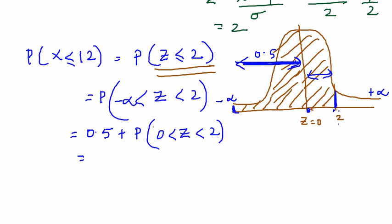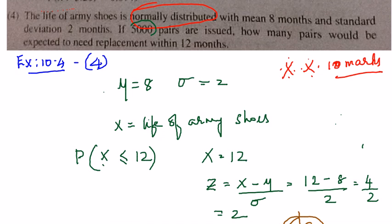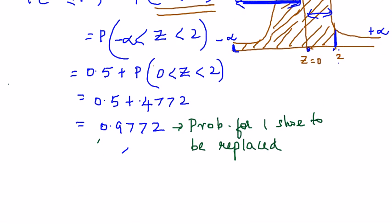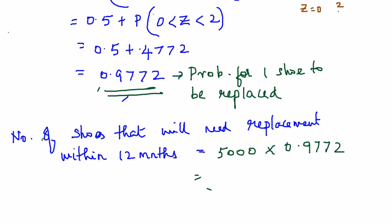You have to look into the area table, but in your public exam the value will be given directly. So I'm writing it straight away: the area from 0 to 2 gives a total probability of 0.9772. This is the probability for a single shoe to be replaced within 12 months. For 5000 pairs of shoes, multiply: 5000 × 0.9772 ≈ 4886.